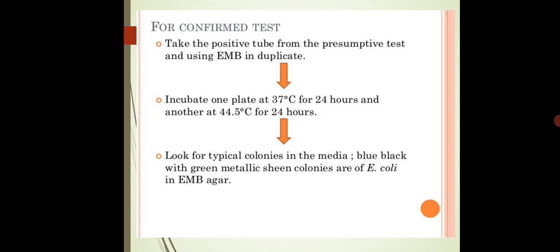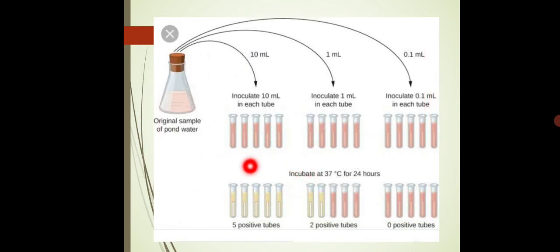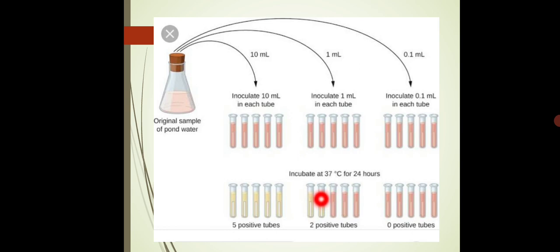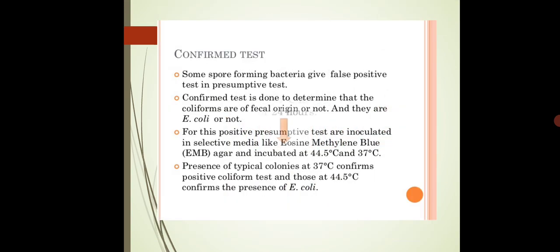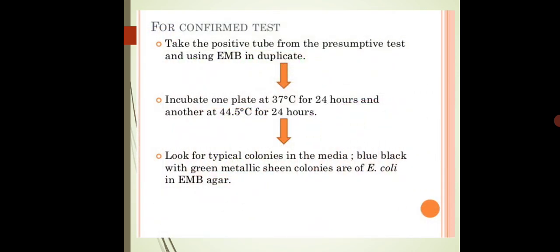We have taken the positive presumptive tubes — for example if we get 5 tubes positive, then we will take those 5 tubes for the confirmed test. From the second set we will get 2 tubes if 2 tubes are positive, and in the third set if we got a negative result we don't have any tubes. So in total 7 tubes, properly labeled for 10 ml and 1 ml samples separately. We take the positive presumptive tubes and streak onto the EMB agar plate.